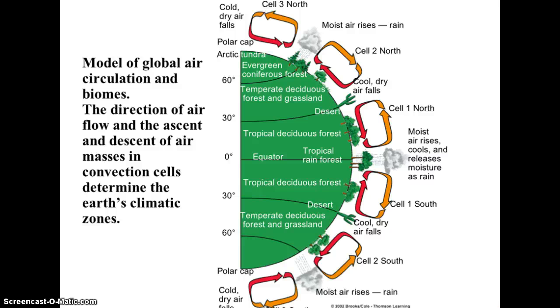Looking at the diagram, you can see rising air at the equator and sinking air that creates high pressure for our deserts. Then once again, rising air and low pressure create rain, and we start seeing forests — you have to have a lot of rainfall to support tree growth. These are our coniferous forests seen across the northern part of the United States, southern Alaska, and southern Canada.